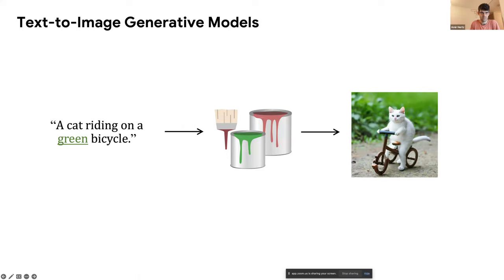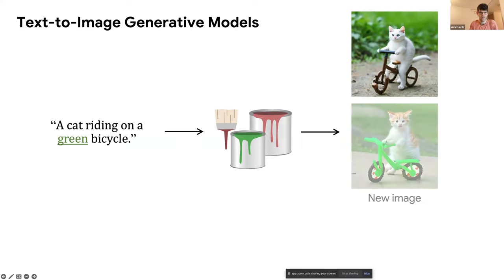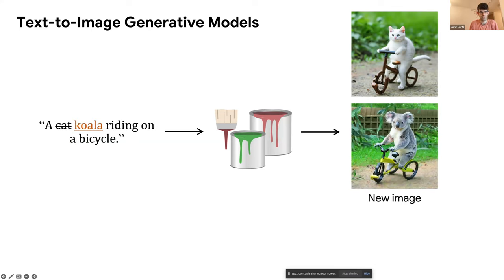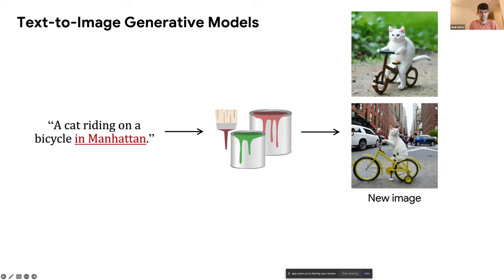In our work, we try to see what happens if we start with a generated image and want to make a small change. For example, we start with a cat riding on a bicycle and want to change the color of the bicycle to green. If we generate again using the modified prompt, we get a completely different image — a different cat, a different background. If we make more modifications — change the animal, change the bicycle to candies or to a city — we get much more different images from what we started with.